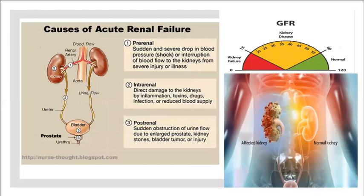Acute kidney injury (AKI), also known as acute renal failure, is a sudden episode of kidney failure or damage within hours or days. It causes a buildup of waste in the blood and disrupts fluid balance. We want GFR (glomerular filtration rate) to be above 60 mL/min; below 15 indicates kidney failure. Causes are categorized as pre-renal, intra-renal, and post-renal.